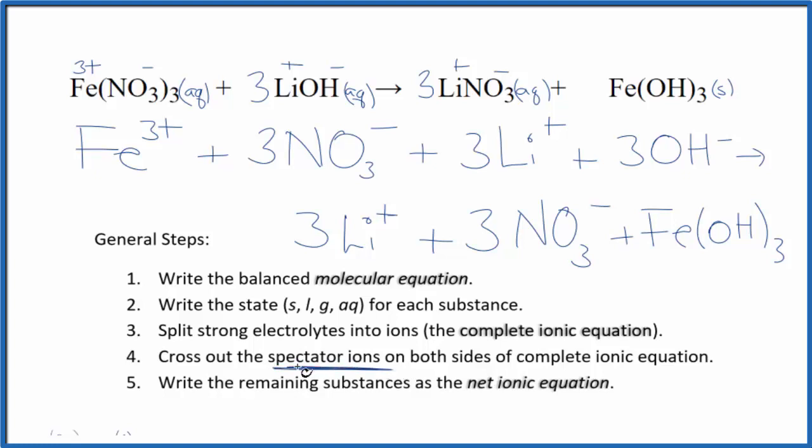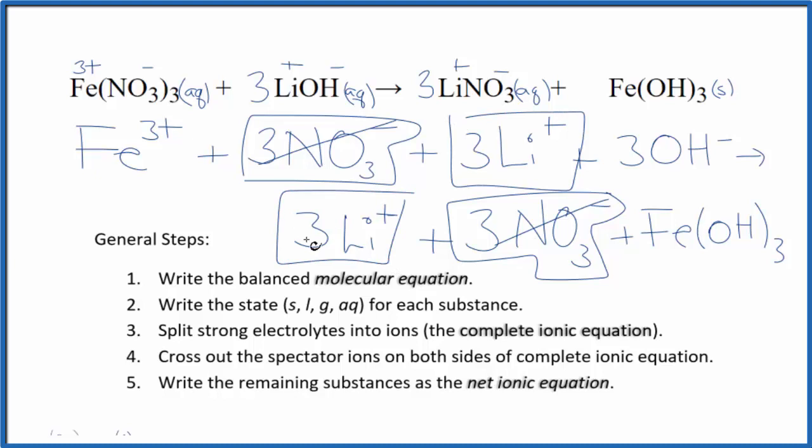Now we can cross out spectator ions. They're on both sides of the complete ionic equation. They haven't changed, and we're really not interested in them. So I'm looking for things that are the same in the reactants and the products. Here's 3 nitrate ions in the reactants and in the products. We can get rid of that. We've got 3 lithium ions in the reactants and in the products. Those go.